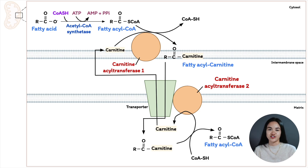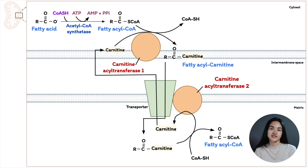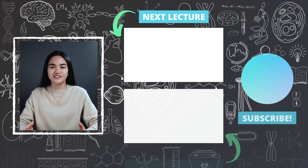That is fatty acid mobilization and transport. In this lecture, we learned that glucagon is secreted when we have low blood glucose levels. We broke down how triacylglycerols are mobilized and how fatty acids are released and transported in the blood by binding to the blood protein serum albumin. We also learned that fatty acids need to be activated and transported into the mitochondrial matrix because the enzymes involved in fatty acid oxidation are found within the matrix.